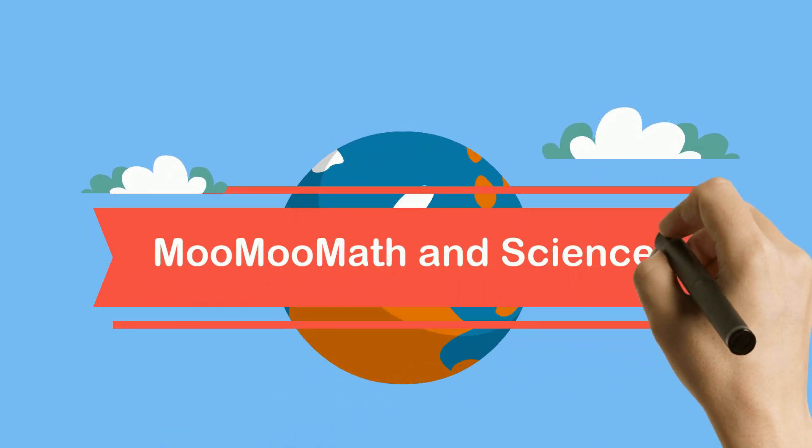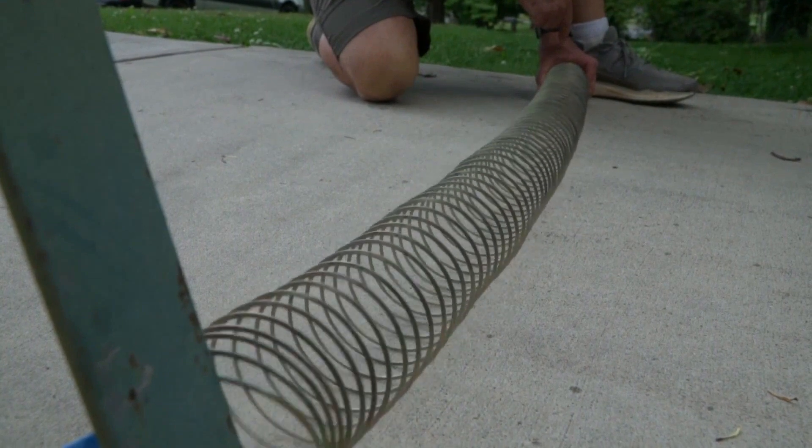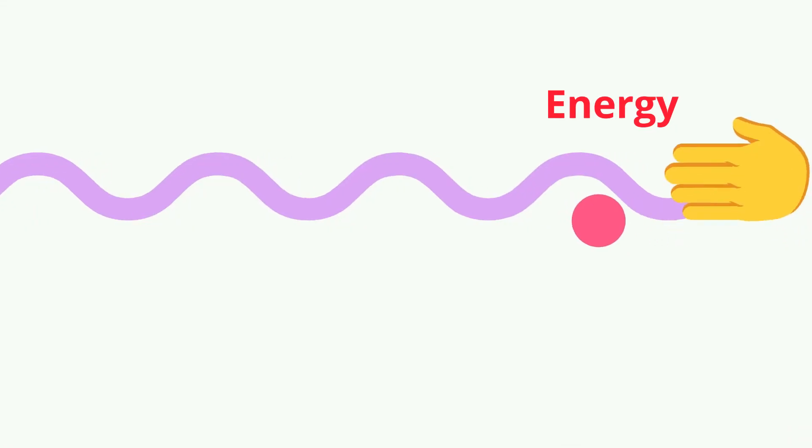A wave is a repeating movement or disturbance that transfers energy through matter or space. Waves transport energy without transporting matter from place to place. Waves are produced by vibrations.